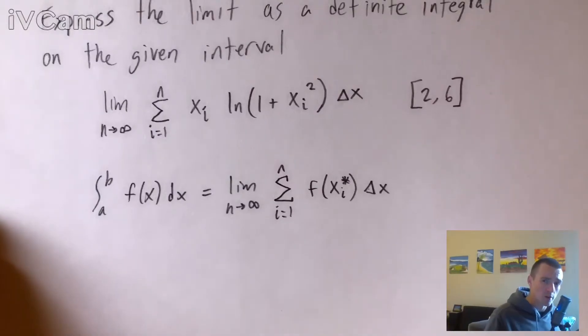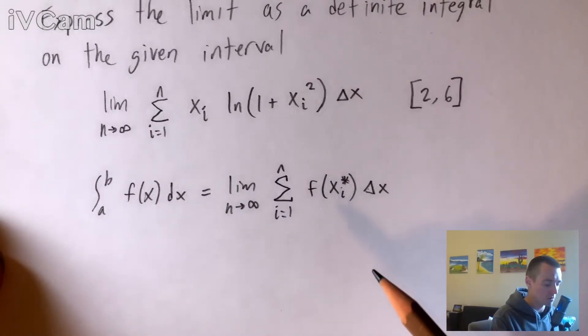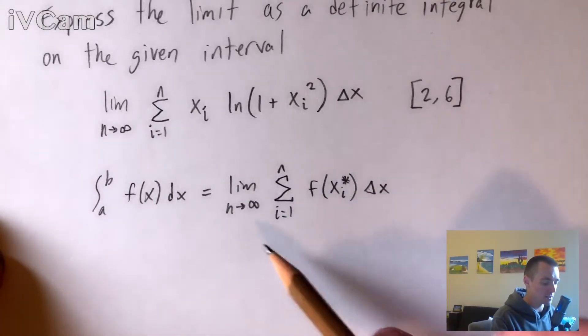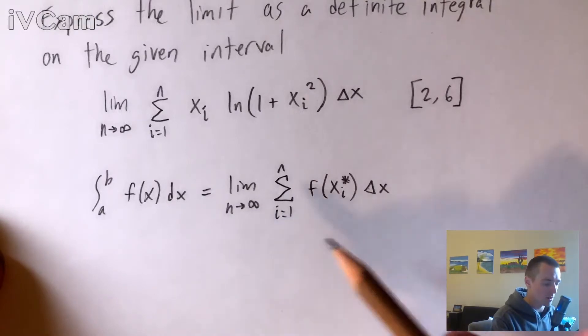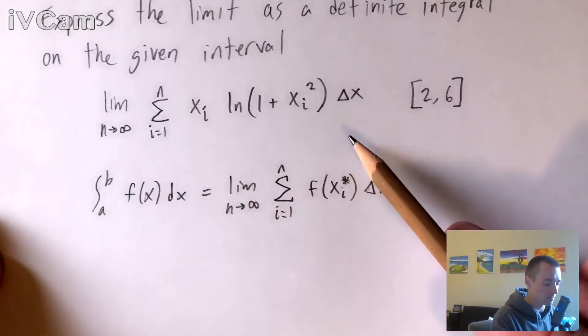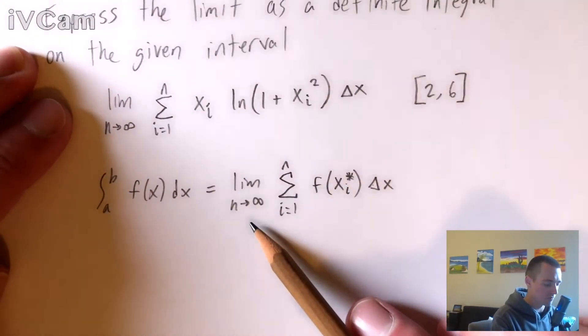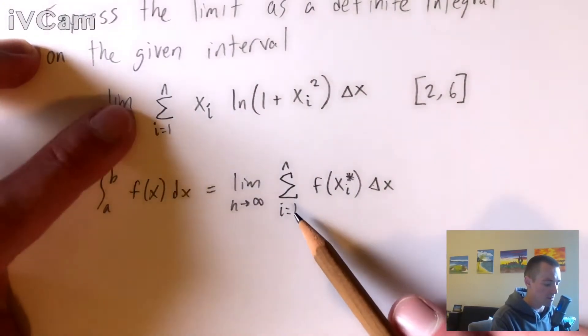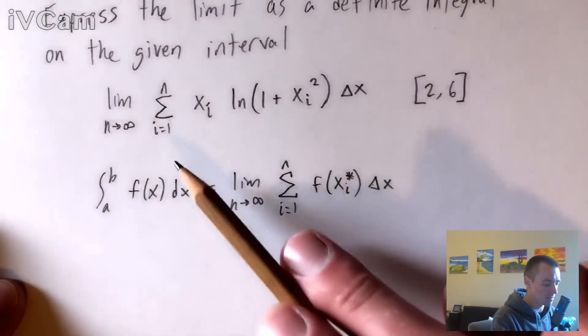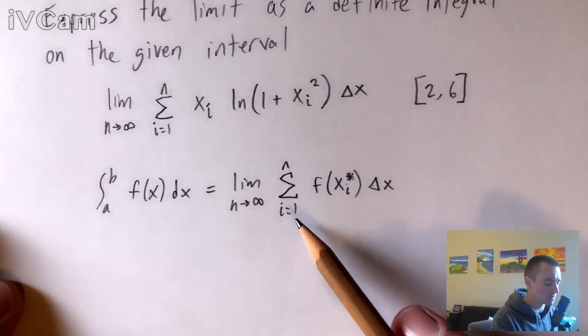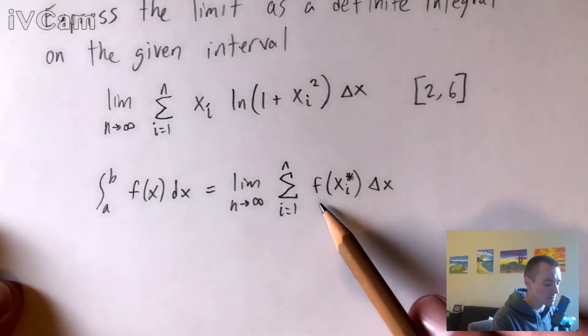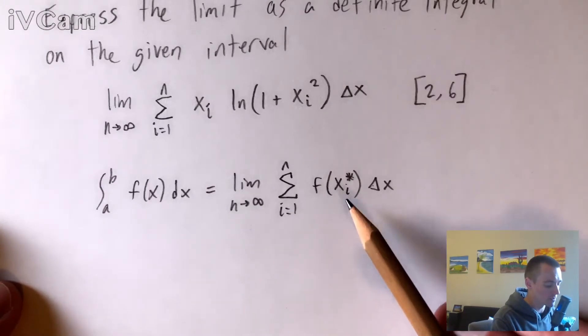So basically what we're trying to do here in this problem is use this formula, which is the definition of an integral, and compare this limit formula here with the limit that we were given. So you can see, in both of these cases, we have the limit as n goes to infinity, and then we have this sum from i equals 1 to n. So that's going to be consistent in both pieces. And then in this formula, we have this f of xi star times delta x.